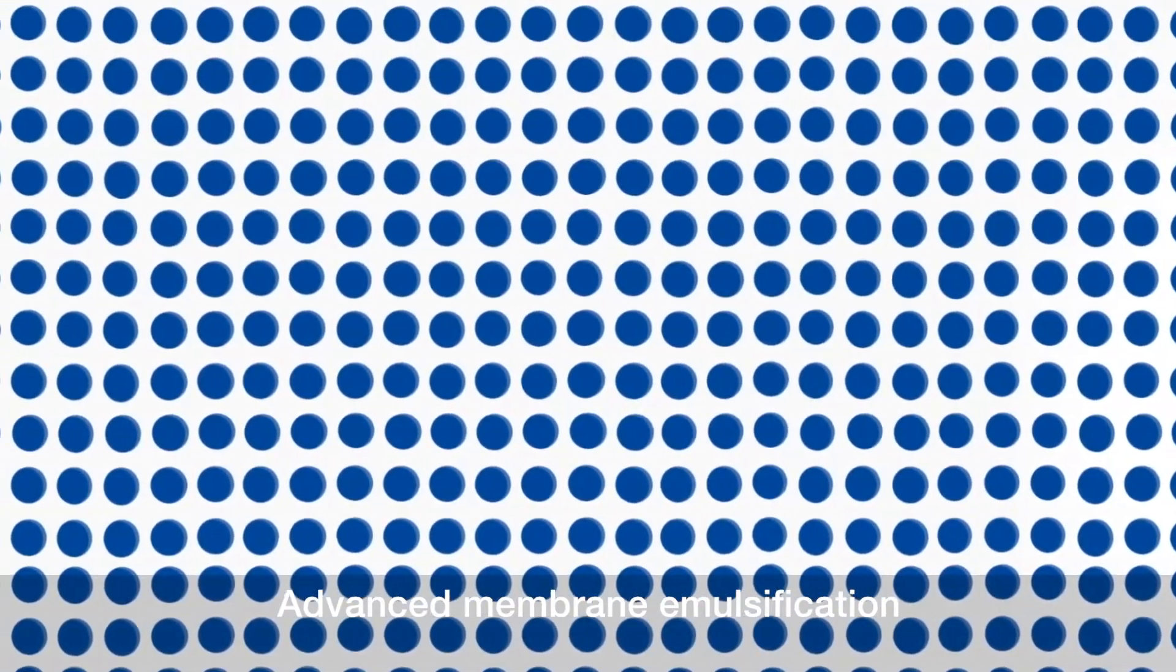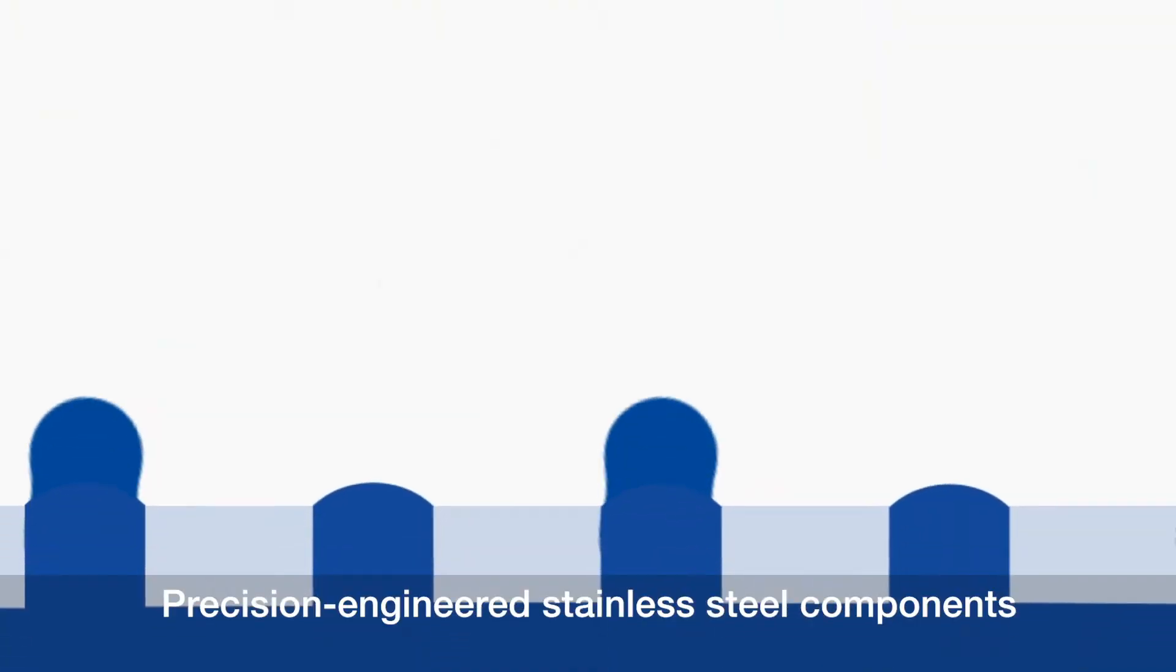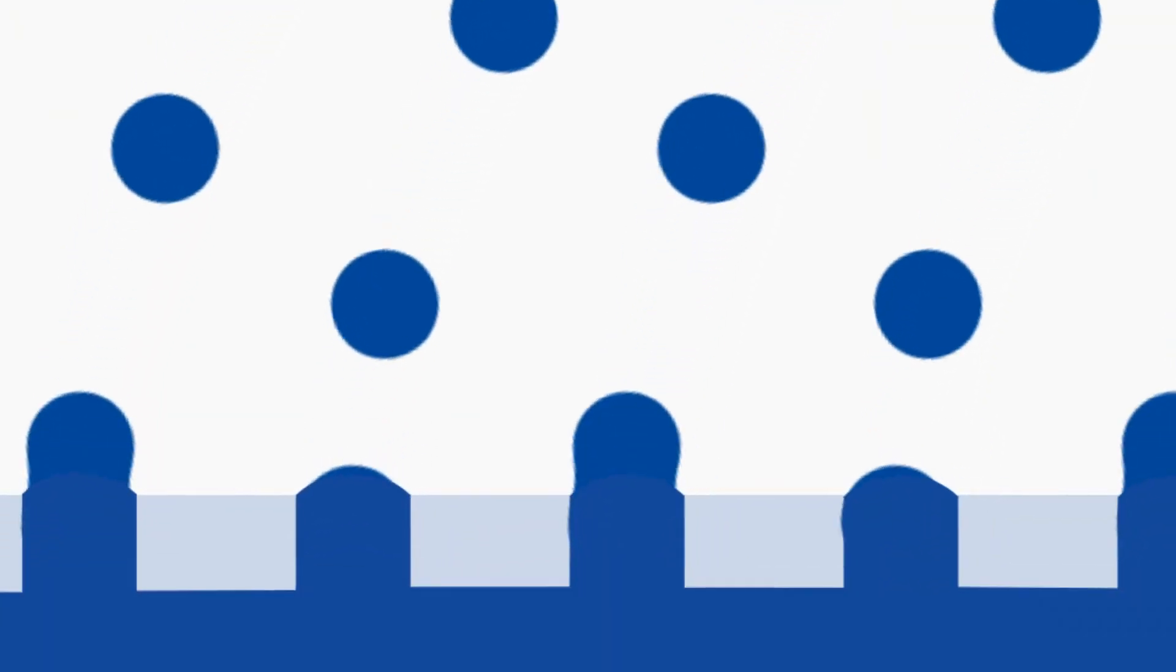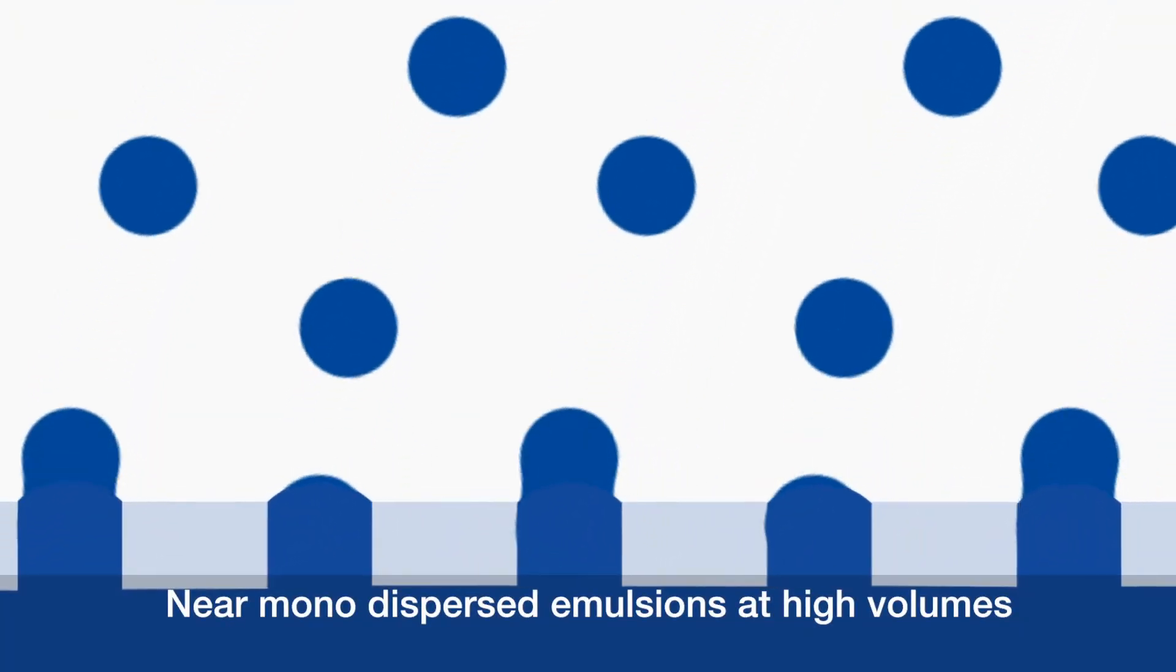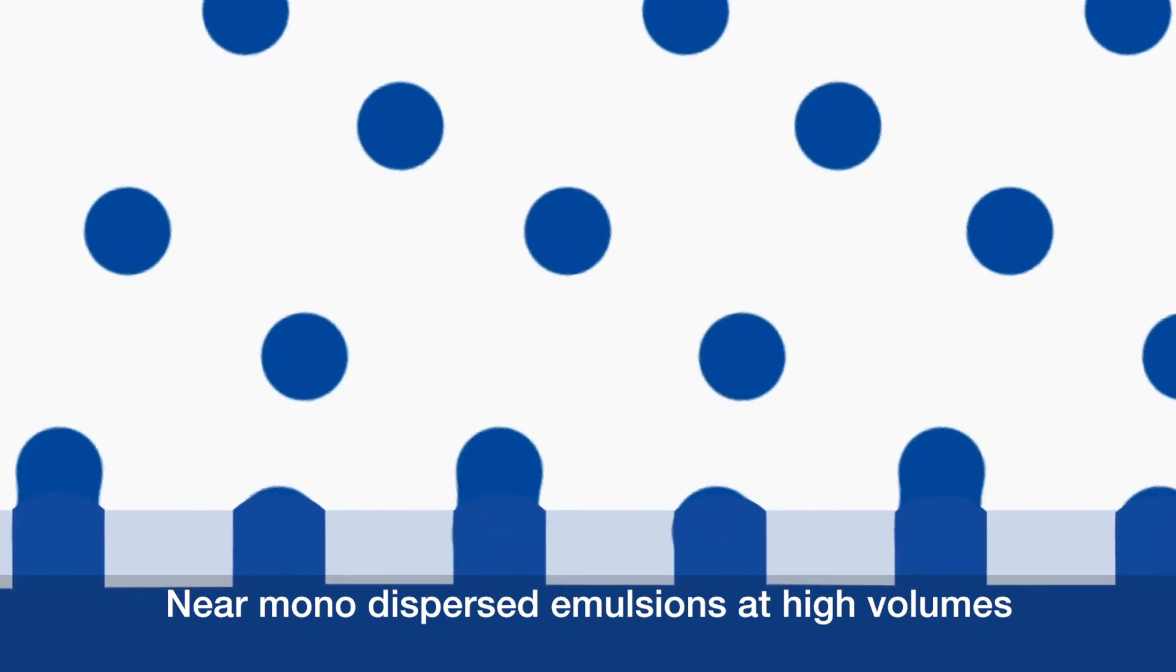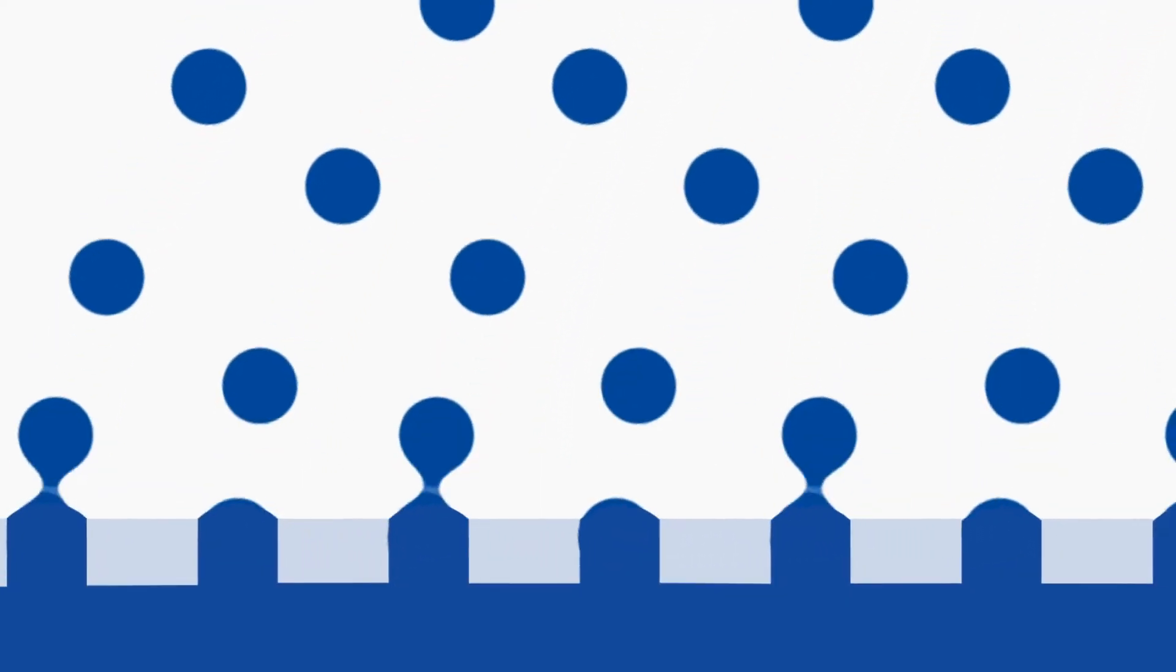The advanced membrane emulsification process uses precision engineered stainless steel components throughout to achieve high quality near mono dispersed emulsions at high volume throughputs.